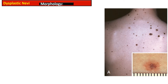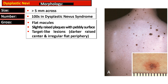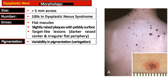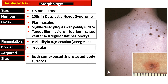Regarding the morphology of dysplastic nevi: these nevi are more than five millimeters across in size, and there may be hundreds of these lesions in dysplastic nevus syndrome. Grossly, they can present as flat macules, as slightly raised plaques with a pebbly surface, or as target-like lesions with a dark raised center and irregular flat periphery. They are recognized by their large size, variegated pigmentation — meaning variability in pigmentation — and irregular borders.